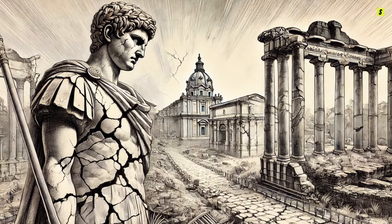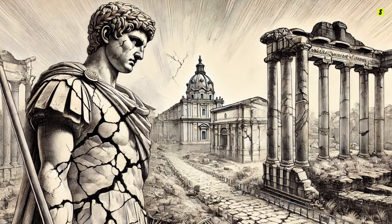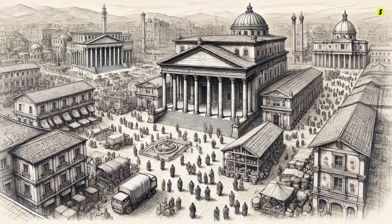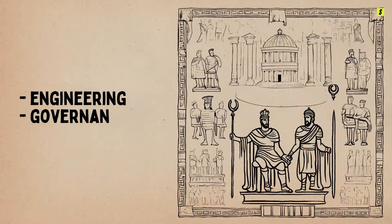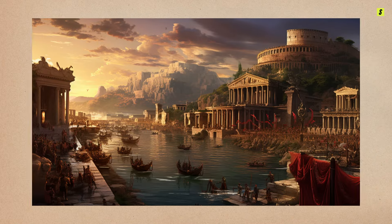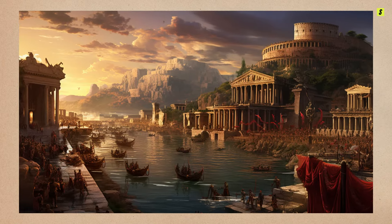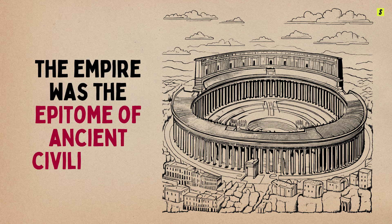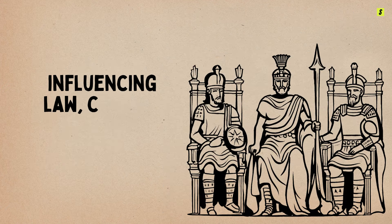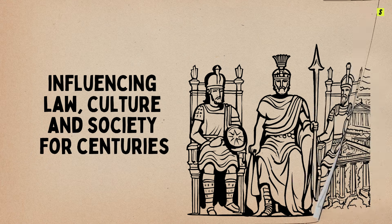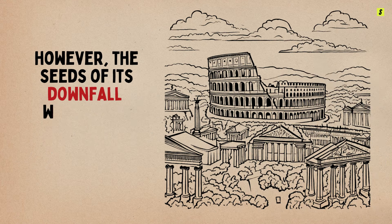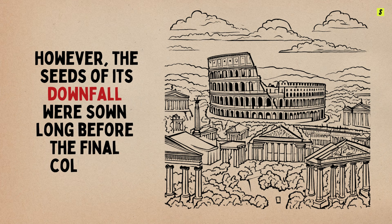Have you ever wondered what led to the fall of one of history's greatest civilizations, the Roman Empire? The Roman Empire, at its height, was a marvel of engineering, governance, and military prowess. Spanning from the British Isles to the Middle East, the empire was the epitome of ancient civilization, influencing law, culture, and society for centuries. However, the seeds of its downfall were sown long before the final collapse.